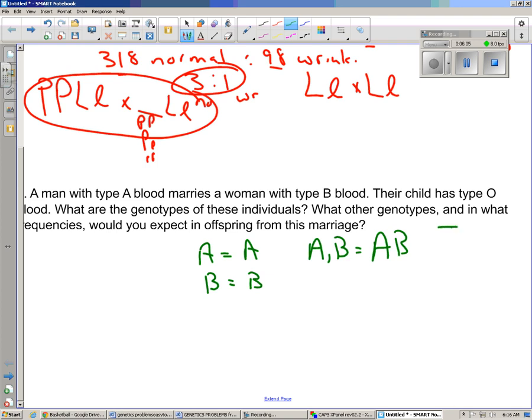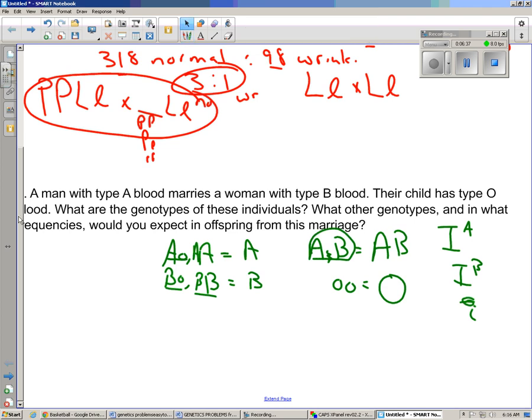The recessive is O. In the book, they use capital I, A, capital I, B, and they use lowercase i. I like to use just the A's, the B's, and little o's to represent type O. So really, this is the situation. If you have big A, little o, you're type A. If you have big B, little o, you're type B. If you have two big B's, you're type B. If you have an A and a B, you're AB. And if you have two little o's, you're O. That might make that problem easier for you.